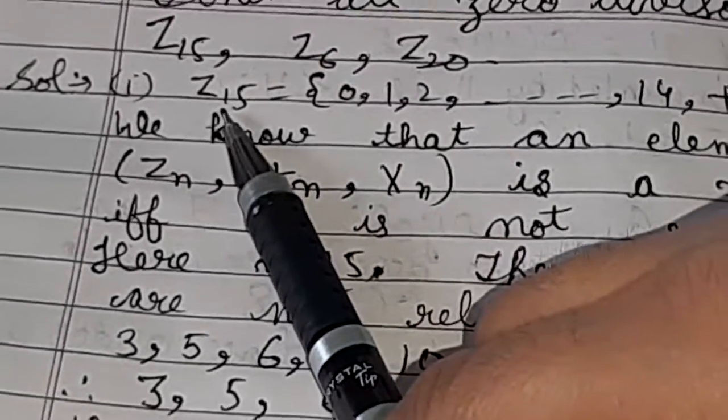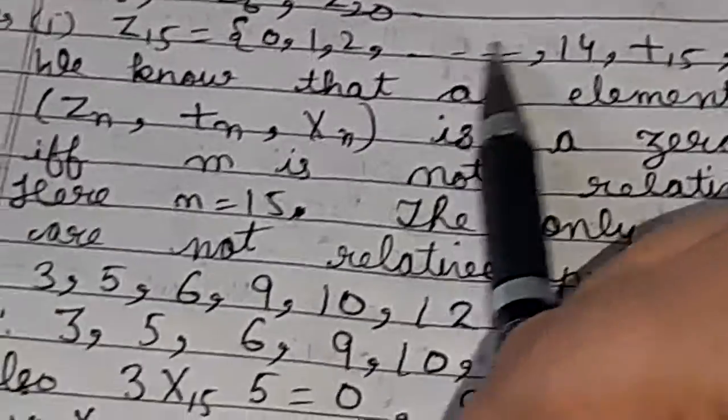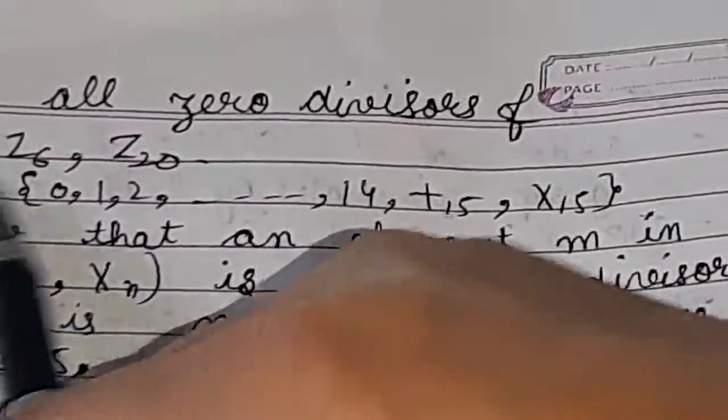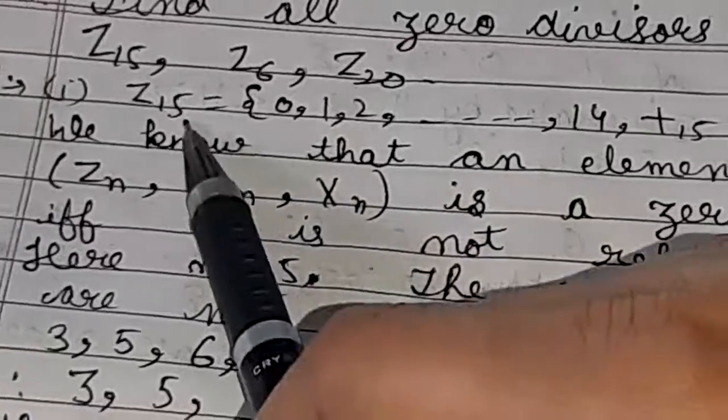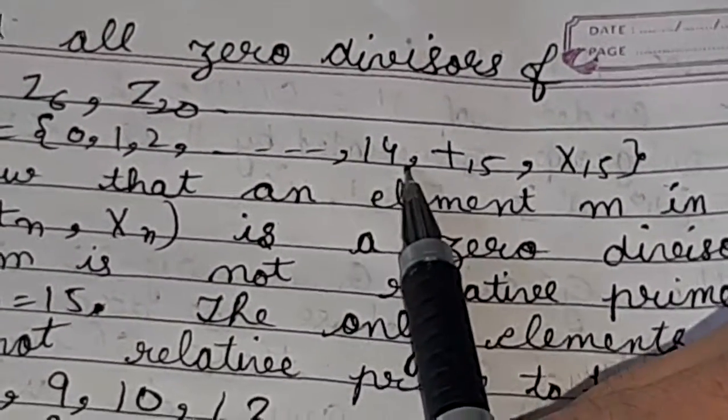See first part z15. We know z15 can be written as 0, 1, 2, till if zn we have zn-1. Here z15, 0, 1, 2, 3, so on up till 14.